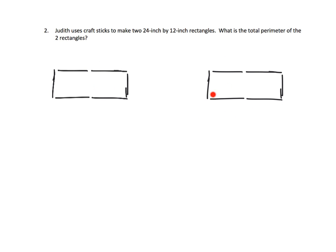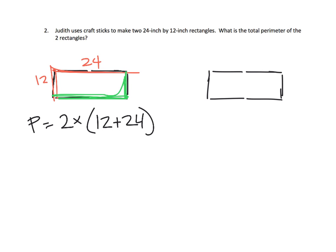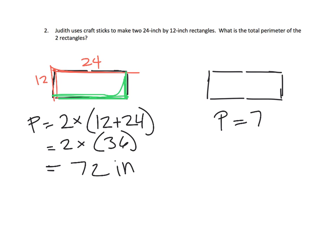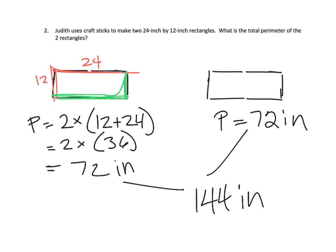In the separated case, we would have 12 plus 24, which is 36, and then we'd multiply by 2 because we'd have another 36 for the other rectangle. So the perimeter is equal to 2 times (12 plus 24), which is 2 times 36, which equals 72. But that's the perimeter of one rectangle. This perimeter is also 72 inches, so we add those together to get 144 inches as our total perimeter. That's one way of thinking about this problem.